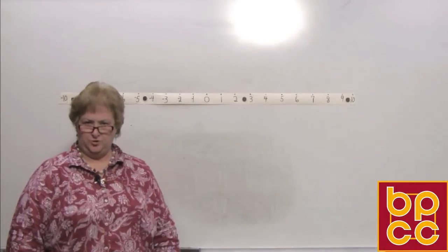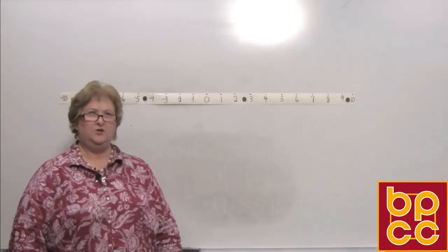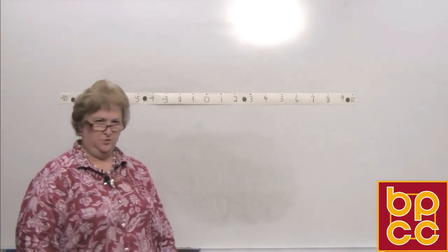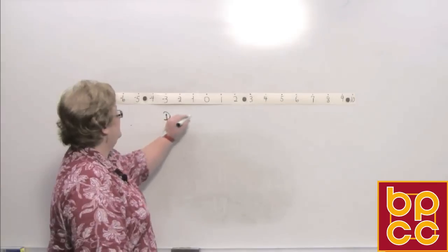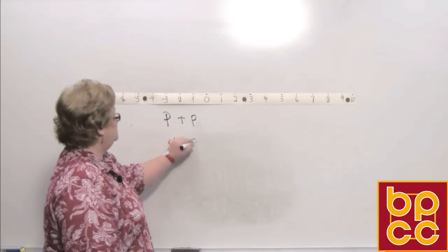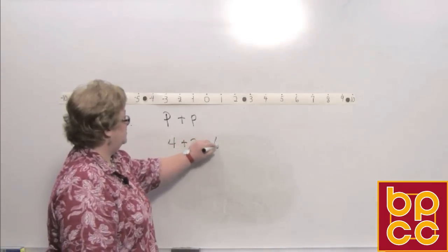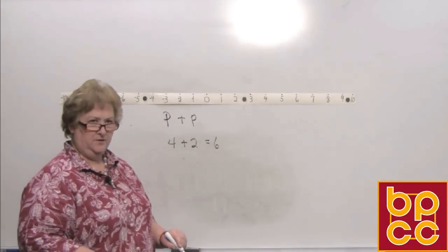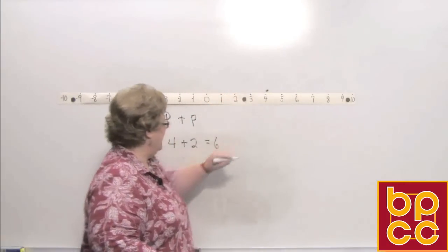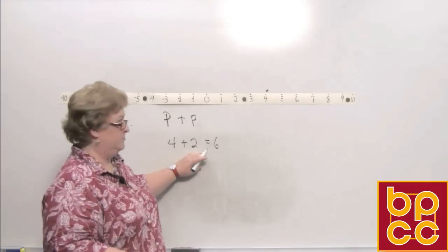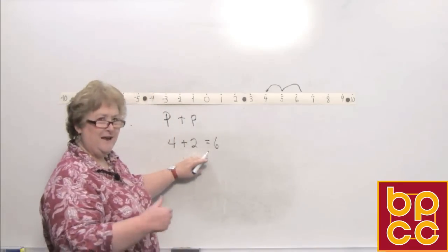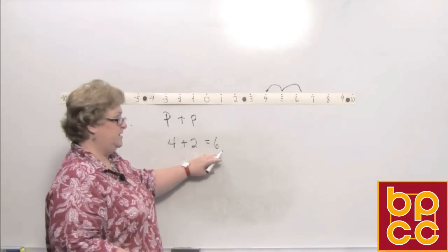We're going to add integers today. Let's start with the easiest — a positive integer plus a positive integer. So positive plus positive: 4 plus 2 equals 6. On the number line, that means go to 4 and add two more in the positive direction. A positive and add more positive to it, you get a positive 6.